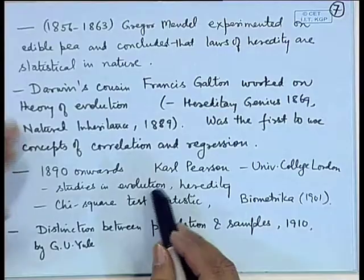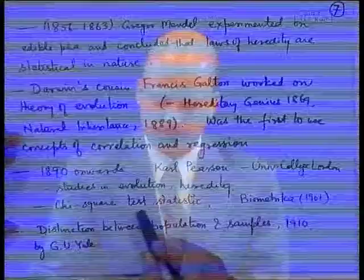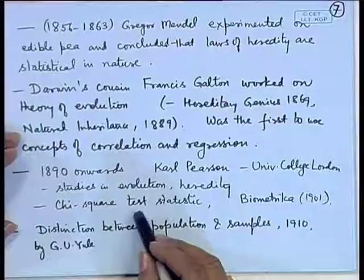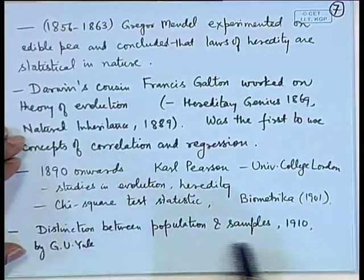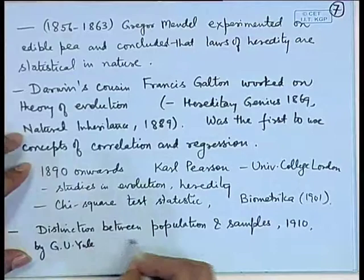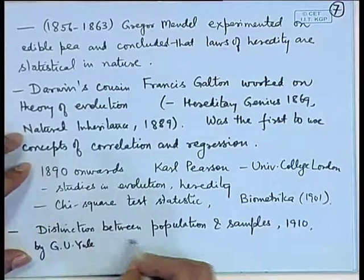Till this time, there was still not a very clear-cut distinction between a population and a random sample — that is, whether we are talking about the full population or a subset of the population. But it was the 1910 book by G. U. Yule that gave a clear-cut distinction between population and samples.